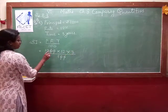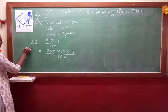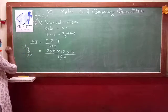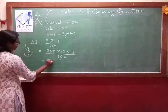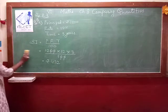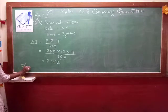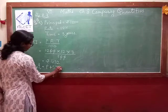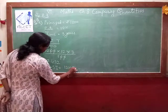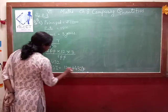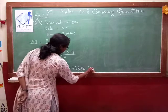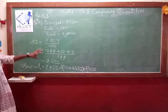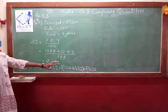P is 1200, rate is 12 percent, time is 3, divided by 100. The two zeros cancel. 12 into 12 is 144. 144 multiplied by 3. The answer is rupees 432. This is your simple interest. Now we want to find the amount. Amount equals principal plus simple interest, which is 1200 plus 432. So the answer is 1632. When you find the simple interest, you add it to the principal to get the amount.